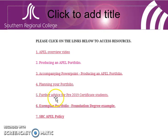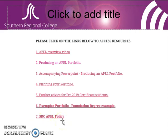Number five is further advice for certificate students applying for the foundation degree who had studied prior to 2019. Number six is an exemplar portfolio — an application for the foundation degree which was successful — used with the student's permission and anonymised. Each portfolio is unique and will differ depending on your experiences; this one is at foundation degree level. Number seven is the SRC APEL policy, which also contains information on the appeals process.